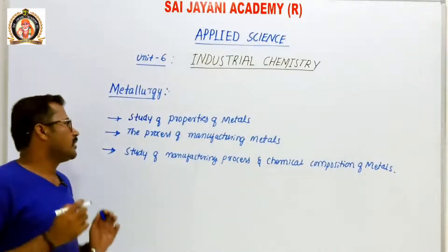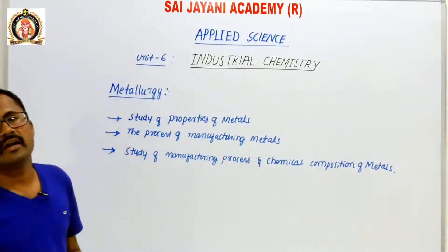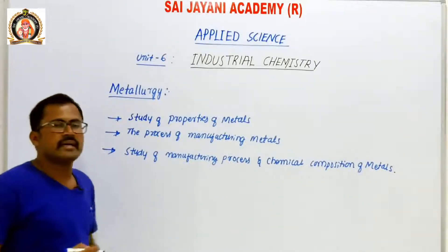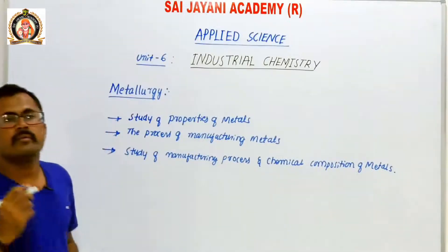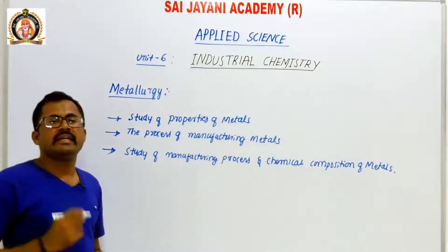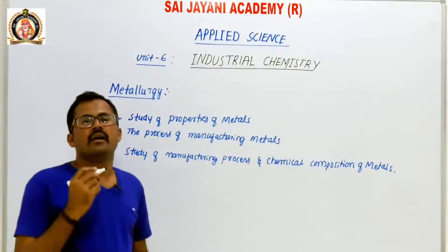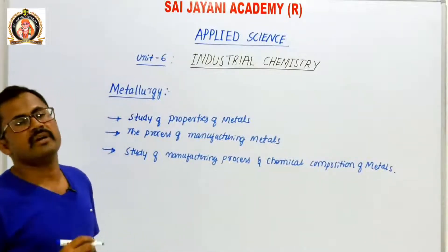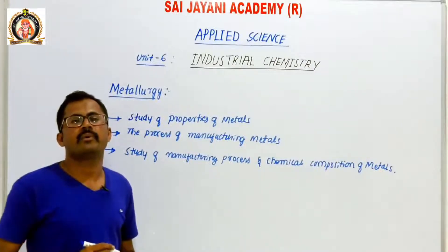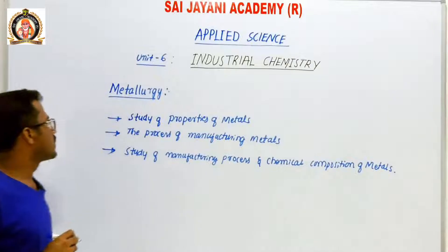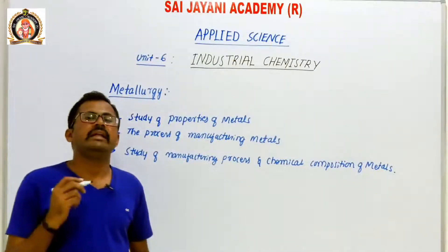The detailed study of mechanical, chemical, or thermal properties of material, manufacturing methods and its various chemical compositions — we call it Metallurgy. So we have a separate branch called Metallurgy where we study in detail about materials, manufacturing methods, chemical composition, and the various properties of materials such as mechanical property, chemical property, magnetic property, electrical property, and thermal properties.